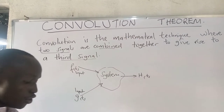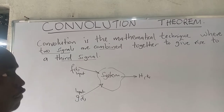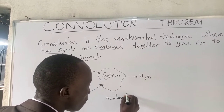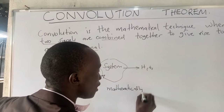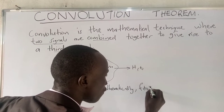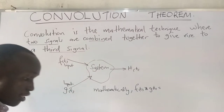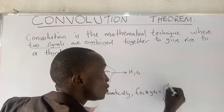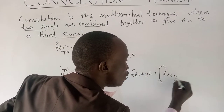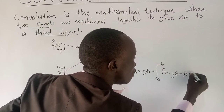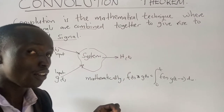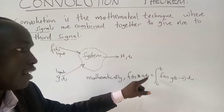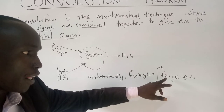This is what we call the convolution theorem. Mathematically, the convolution theorem can be defined as: when you combine f of t and g of t, it is the same as the integral from zero to t of f(u) times g(t minus u) du. This is the mathematical definition of the convolution theorem, where combining two functions f(t) and g(t) gives the integral from zero to t of f(u) g(t minus u) du.